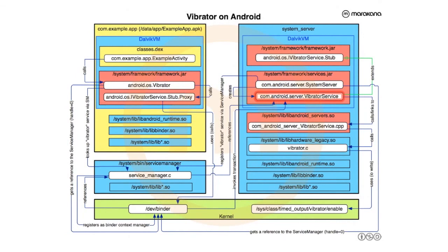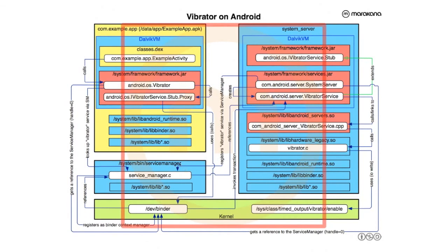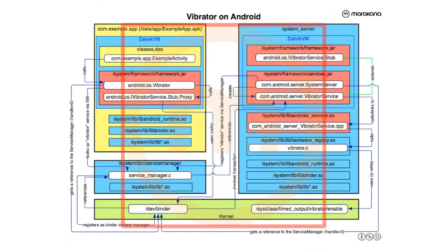There are 60-plus services, not all coming from the system server, but most are. One of the services it registers in this case is the vibrator service — it instantiates it and that creates it. The vibrator service happens to implement an IVibrator AIDL, which turns out to be an interface in Java compiled into an interface that particularly implements a stub. The vibrator service, once instantiated, gets registered with the service manager. So now the service manager knows about this service. The system server boots all the services, then tells the activity manager service it's done. The activity manager service sends out the boot-completed event and an intent to launch the launcher — and now our system is booted.